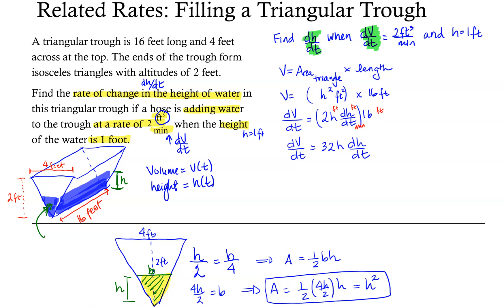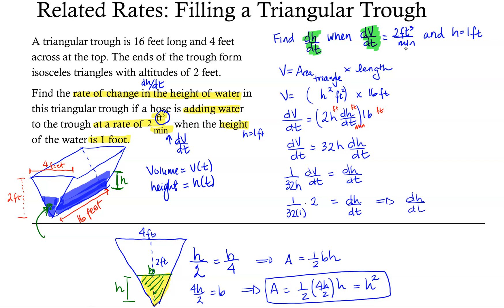We were asked to find dH/dt, and we now have an equation relating dH/dt and dV/dt. Dividing both sides by 32h gives dH/dt = (1/32h) · dV/dt. Substituting H = 1 foot and dV/dt = 2 cubic feet per minute, we get dH/dt = (1/32)(1)(2) = 1/16 foot per minute.